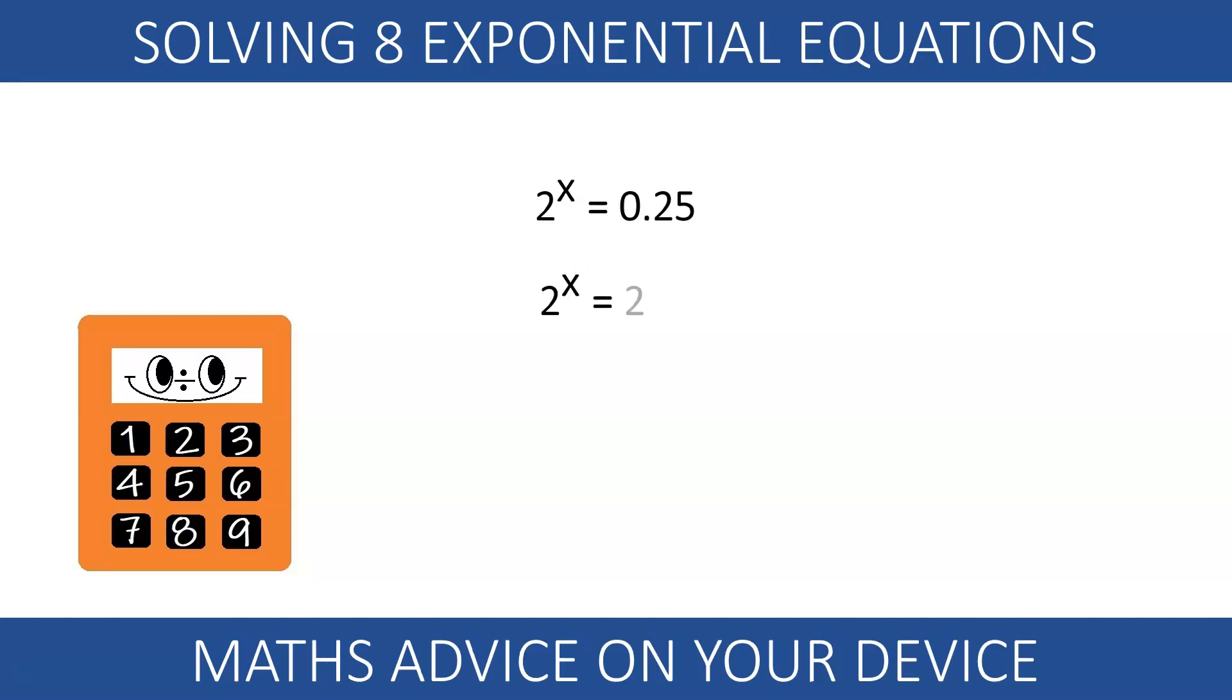In this equation, 0.25 is the reciprocal of 4. We indicate this by using a negative exponent. 0.25 is 2 to the minus 2. x must be negative 2.